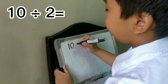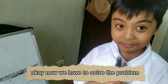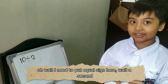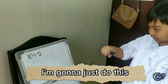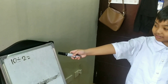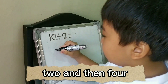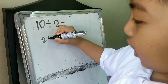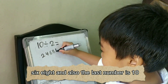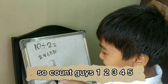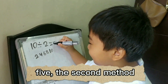10 divided by 2. Okay, now we have to solve the problem here. So, let's keep counting by 2's: 2, then 4, 6, 8, and also the last number is 10. So count: 1, 2, 3, 4, 5. The answer is 5.